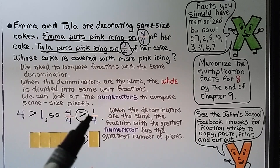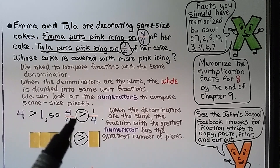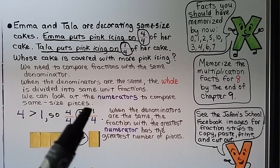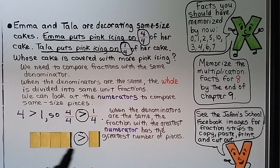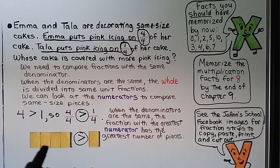We have 4 fourths and 1 fourth. 4 is greater than 1, so 4 fourths is greater than 1 fourth. When the denominators are the same, the fraction with the greatest numerator has the greatest number of pieces — that's a 4 versus a 1. Using fraction strips, here's 4 one-fourth pieces for 4 fourths, and here's 1 one-fourth piece for 1 fourth — we can see that's a lot more than that one.